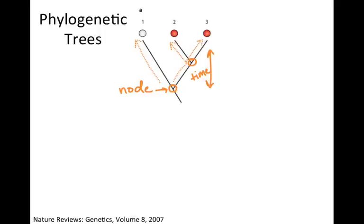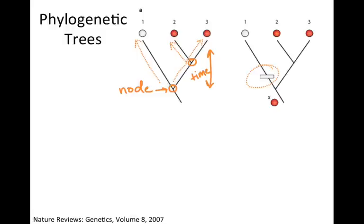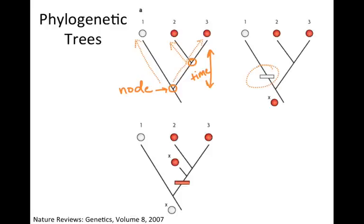Trees can be tricky, because characteristics can be derived at different times and for different reasons. In one tree, the ancestor has the red characteristic, but later a white characteristic is derived — those dashes represent derived characteristics that evolved under some selective pressure. In another tree, the ancestor is white, the red characteristic was derived later, and there's an extinct ancestor with that trait.